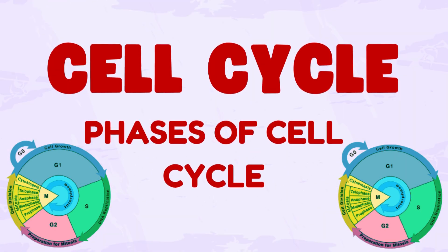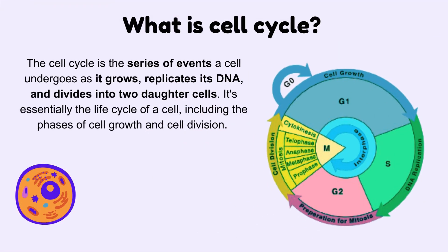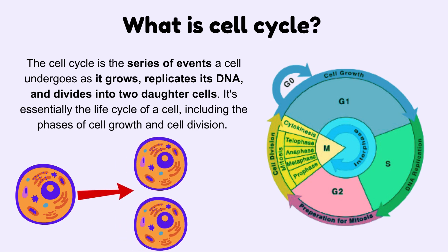Welcome to today's lecture on the cell cycle. The cell cycle is the series of events a cell goes through as it grows, replicates its DNA, and divides into two daughter cells. It's essentially the life cycle of a cell, including the phases of cell growth and cell division.